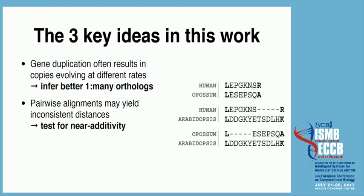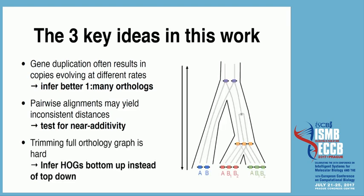Another problem with poorly assembled genomes is fragmentary sequences. When you do pairwise comparison and estimate distances, you may do so on alignments that are not consistent. We do some tests of additivity to address this. Finally, the HOG construction — instead of doing it top-down, we now do it bottom-up. It's actually much more natural to do it that way, and it's also much faster.